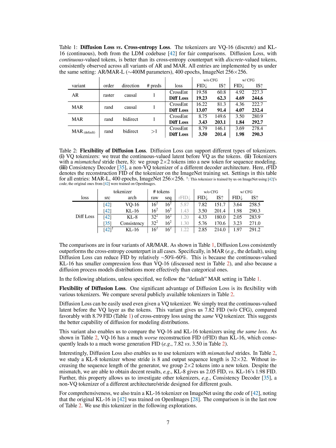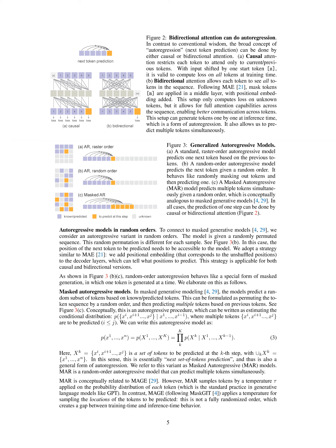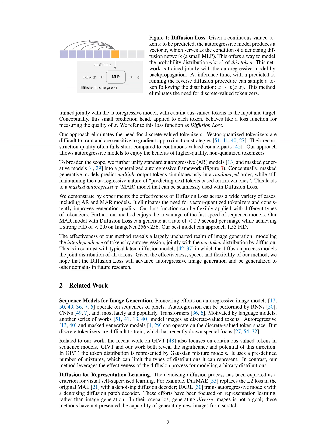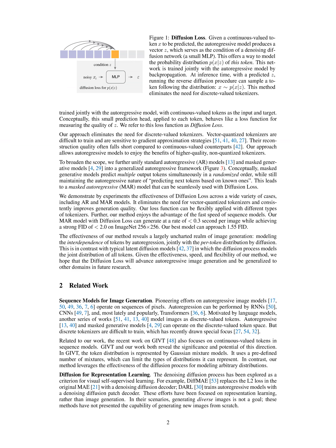The proposed method achieved impressive results on the ImageNet 256x256 dataset. In terms of speed, the model was able to generate images at a rate of less than 0.3 seconds per image. Regarding FID scores, the model achieved a strong FID of less than 2.0, with the best model approaching 1.55 FID, demonstrating high-quality image generation compared to other methods. Additionally, the generation quality was consistently improved by the diffusion loss, eliminating the need for vector-quantized tokenizers and allowing for higher-quality non-quantized tokenizers. The method showcased effectiveness, speed, and flexibility, advancing autoregressive image generation.